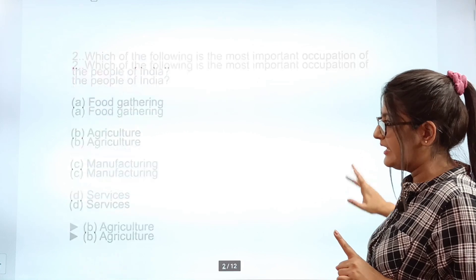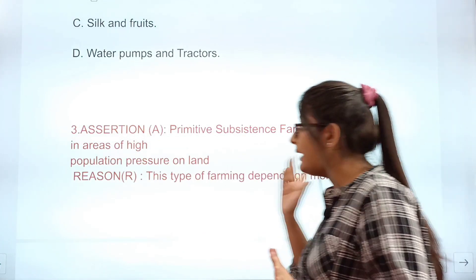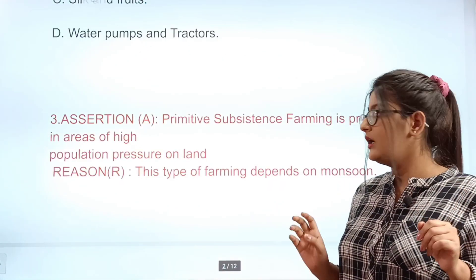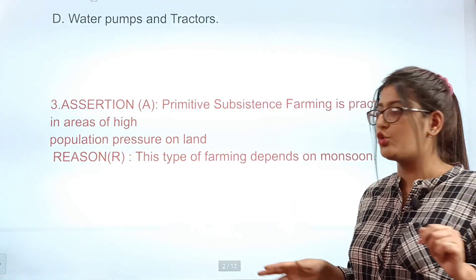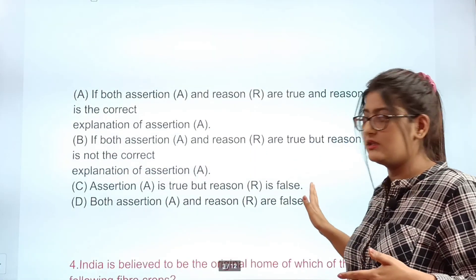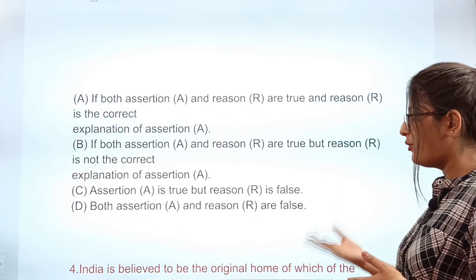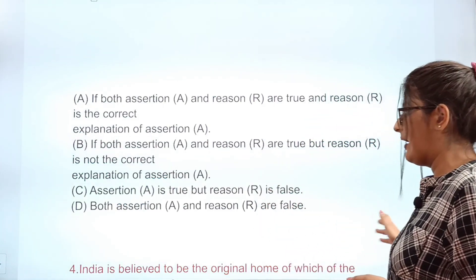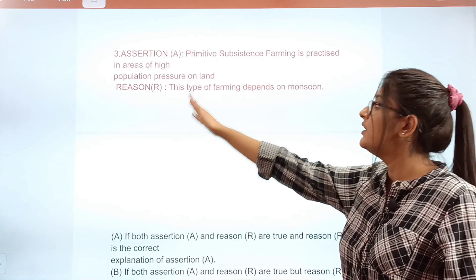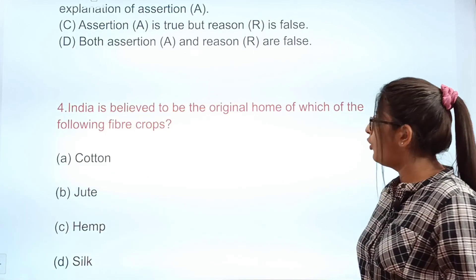Question 4 is another assertion and reason question. Assertion: Primitive subsistence farming is practiced in areas of high population pressure on land. Reason: This type of farming depends on monsoon. Option A: both true and reason is correct explanation. Option B: both true but reason is not the explanation. Option C: assertion true, reason false. Option D: both false. Write down your answer in your notebooks.